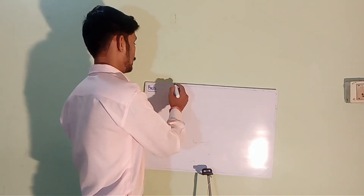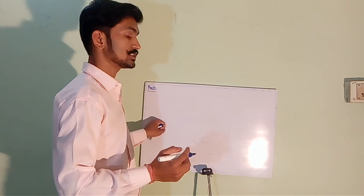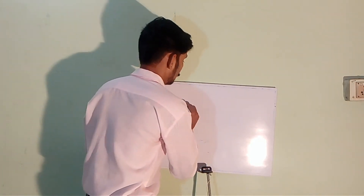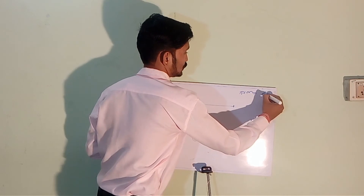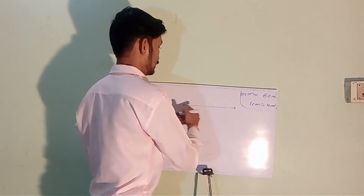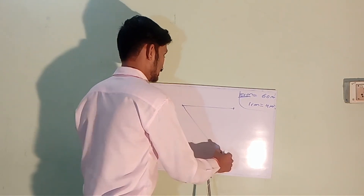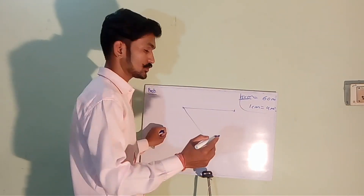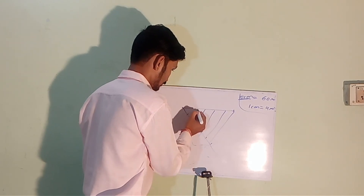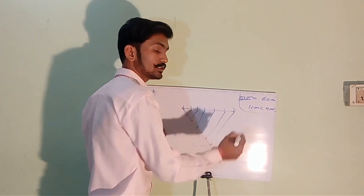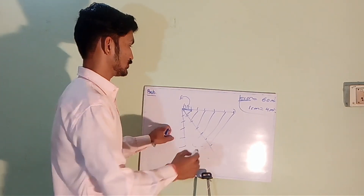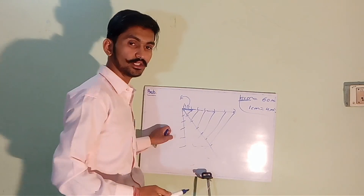Now we need to assume the maximum time to be measured. Let's say 60 minutes. A line of 15 centimeters will show 60 minutes because 1 centimeter is showing 4 minutes. So we take a line of 15 centimeters and divide it into 6 equal parts, each showing 10 minutes. Then divide each segment into 10 equal smaller parts to get 1 minute.